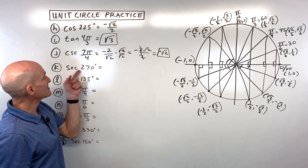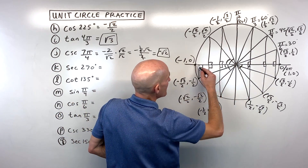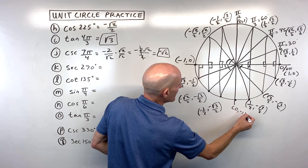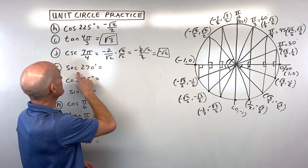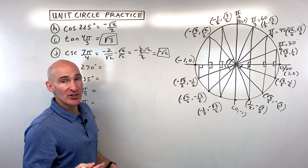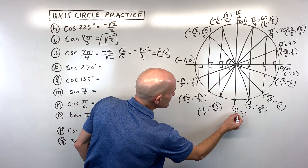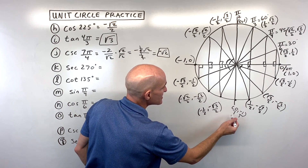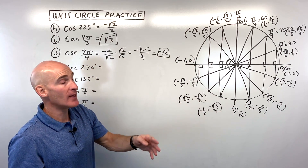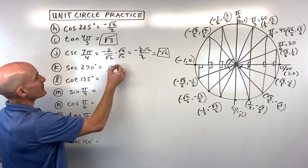Letter K: secant of 270 degrees. 270 degrees puts us at (0, negative 1). Secant is the reciprocal of cosine (the x-coordinate). The x-coordinate is 0, so the reciprocal would be 1/0, which is undefined.